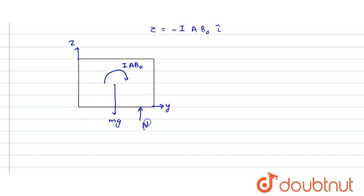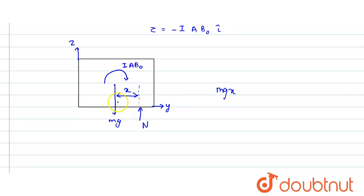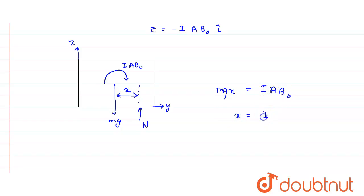This shift distance is given as x in the question. Applying rotational equilibrium: mg·x tries to rotate in the counterclockwise direction and i·A·B₀ tries to rotate in the clockwise direction. For equilibrium these torques must be equal: mg·x = i·A·B₀. Solving, x = i·A²·B₀ / mg, where the area A = a².